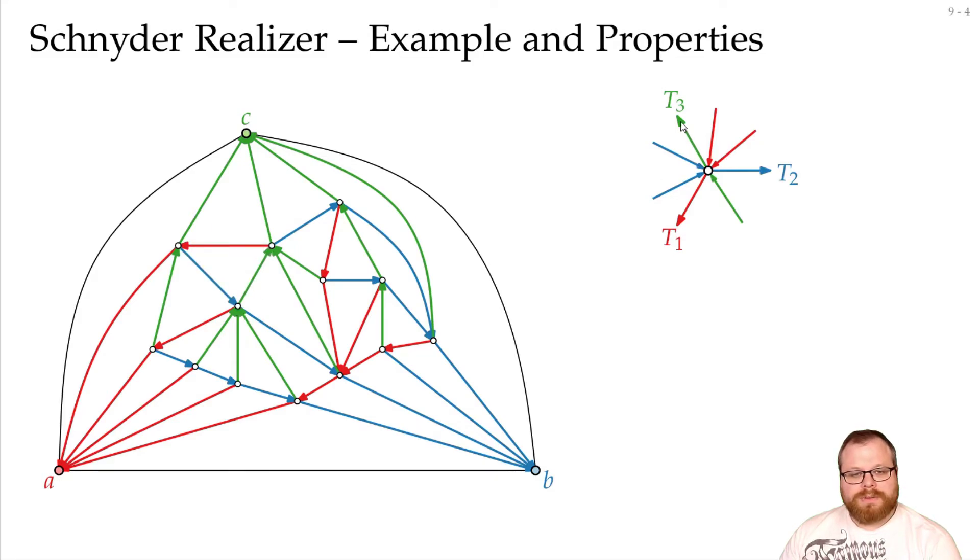And here, instead of going from outgoing green to outgoing red with a blue in between, we first have an incoming red, and then outgoing green, outgoing red. And here, instead of having outgoing blue, incoming red, we first have incoming green, and then the outgoing blue. We still have the local properties, and both of these are valid Schnyder realizers.